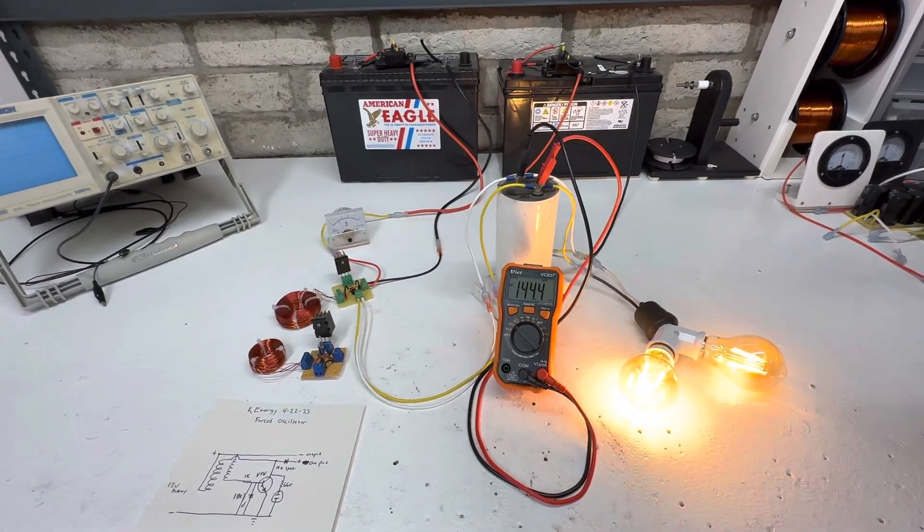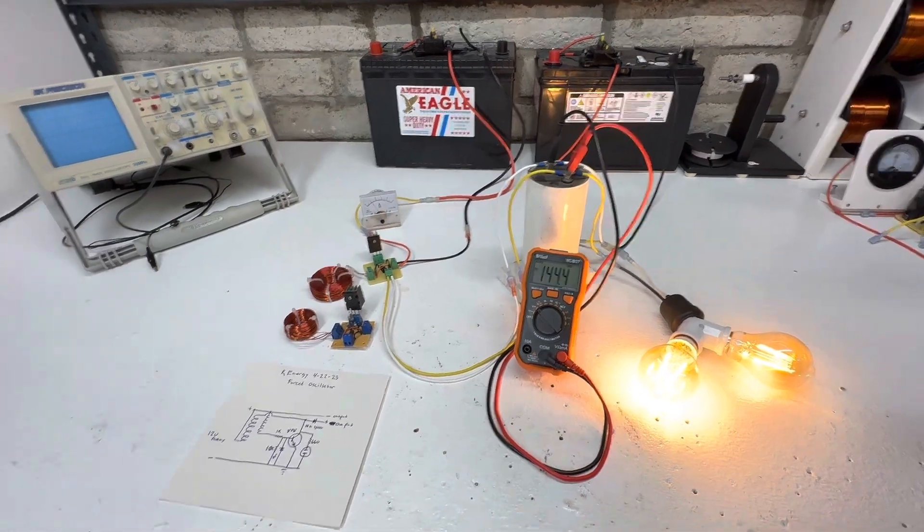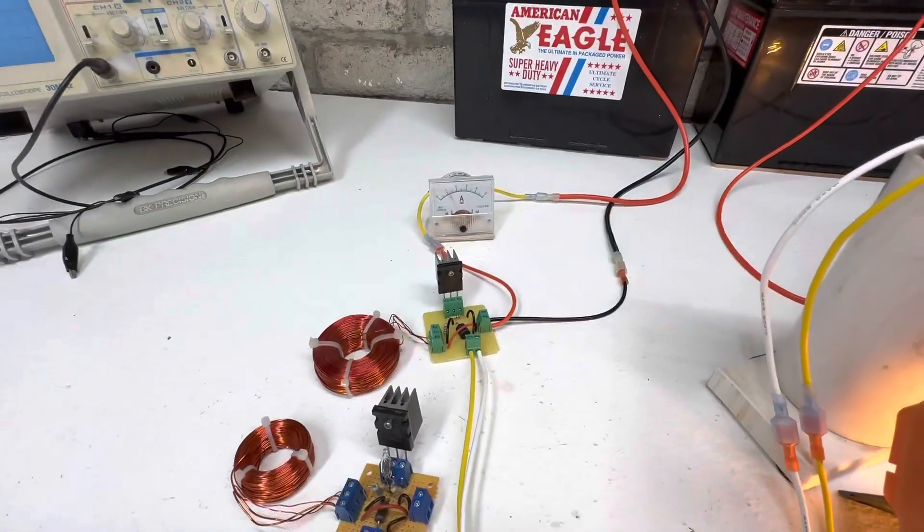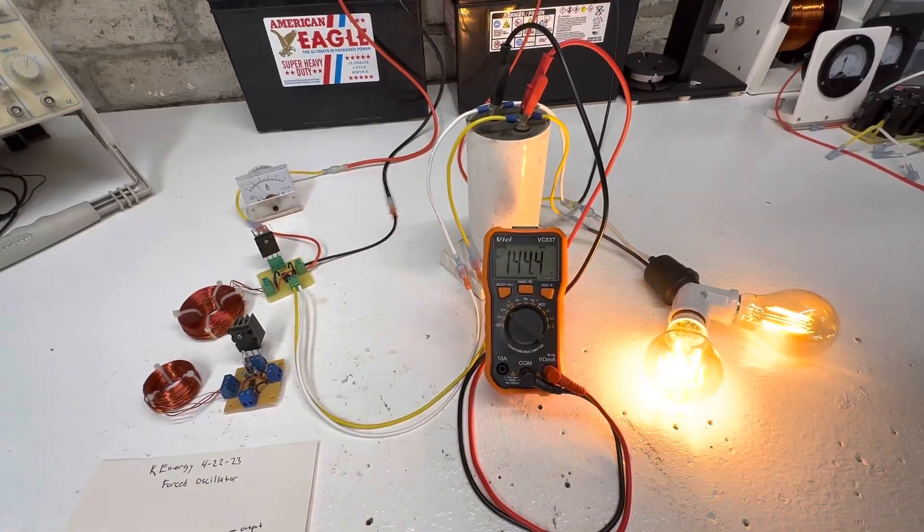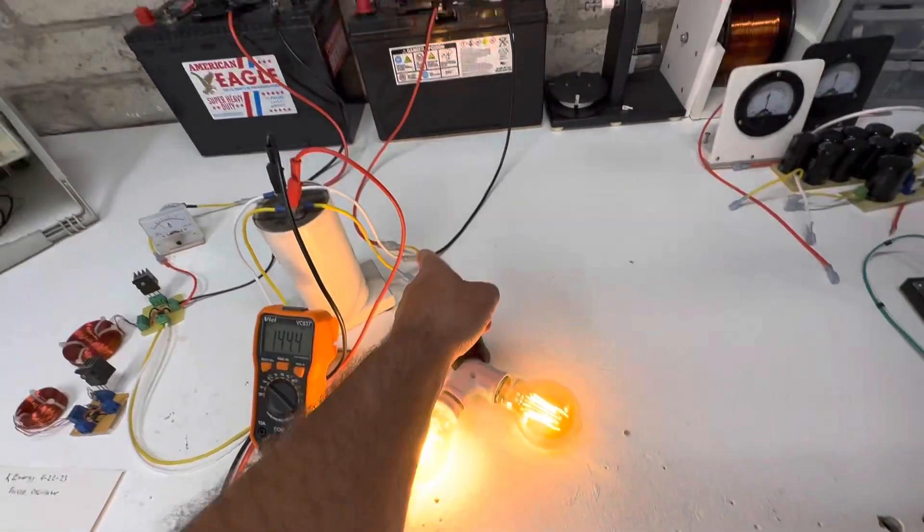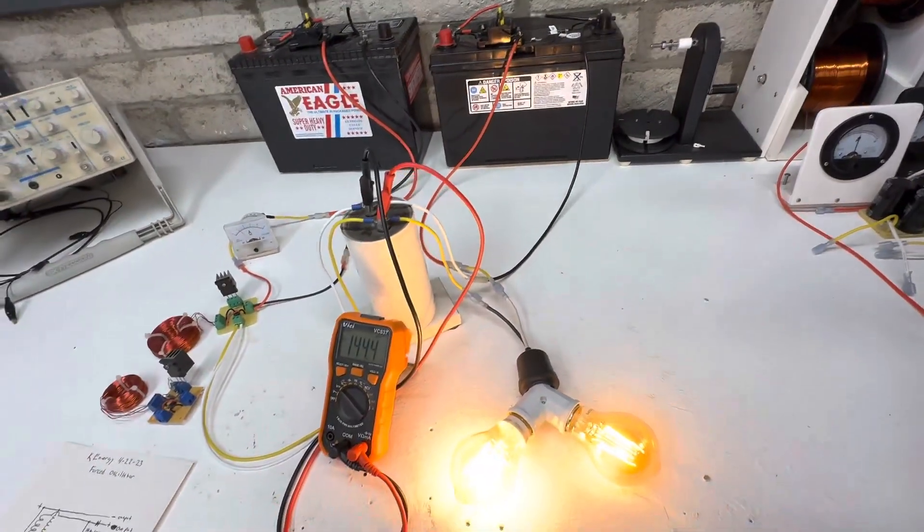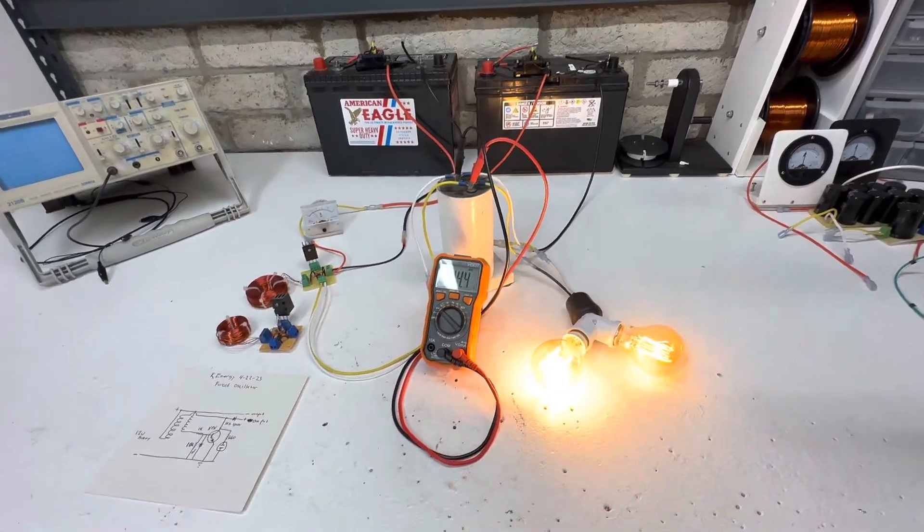So this is just a demonstration of some of the voltage that you could get out of these little oscillators. So we're running just a hair over one amp right now. We're running at 144 volts in series with the second battery, so everything that goes through those light bulbs ends up in that battery back there. So pretty neat little circuit, quite simple.